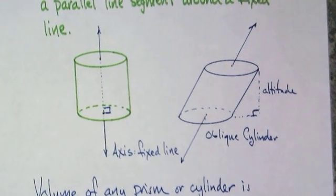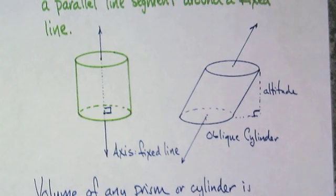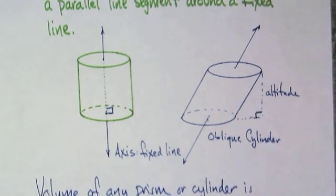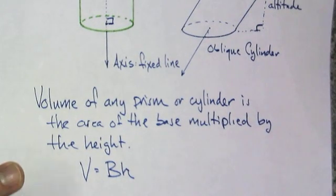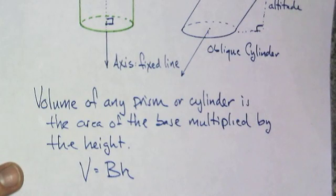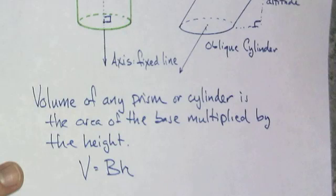And oftentimes, it's V equals capital B times H. And capital B refers to the area of the base. This works for any of these poly—not any of the polyhedra—it works for the cylinders and the prisms.